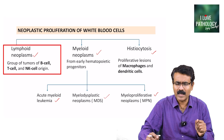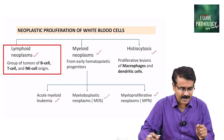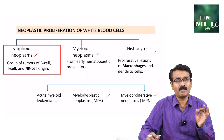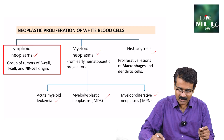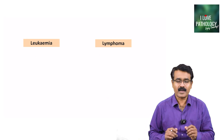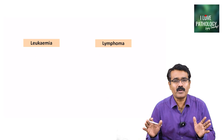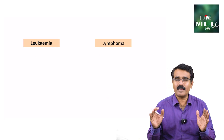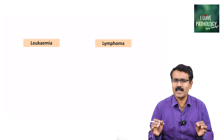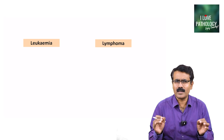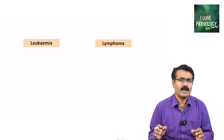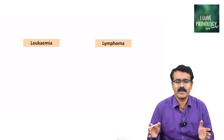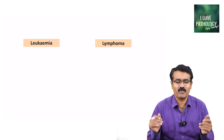What are lymphoid neoplasms? These are the group of tumors of B cell, T cell, and NK cell origin. Before we understand lymphoid neoplasms further, let us see what we mean by leukemia and how it is different from lymphoma.